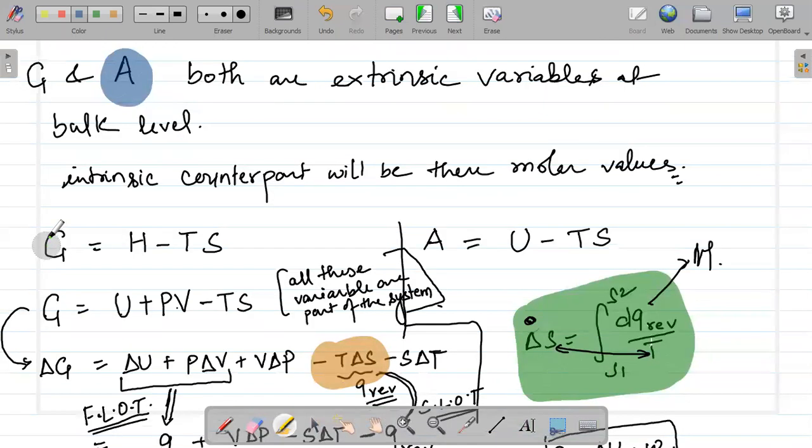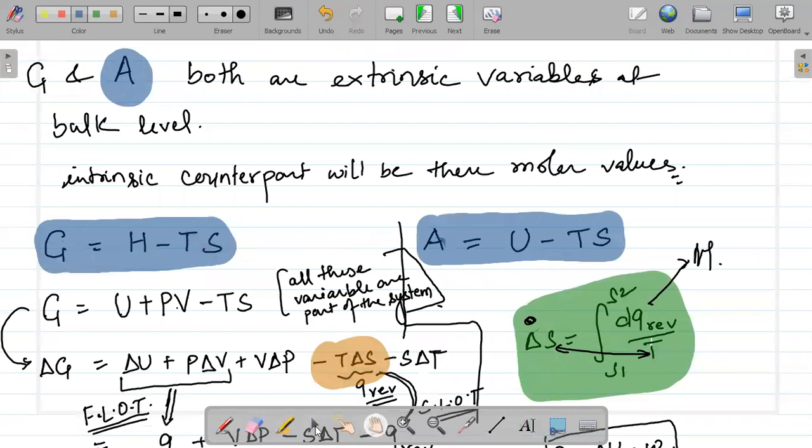G was written as mathematically H minus TS and A was simply equal to U minus TS. G can be built on all the deductions and mathematical expressions. We can build similarly about A.